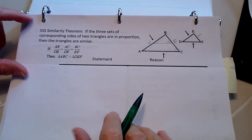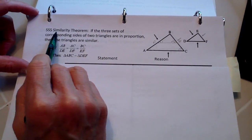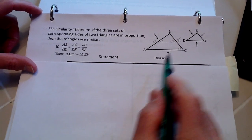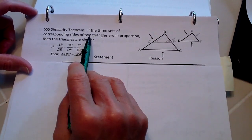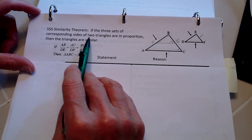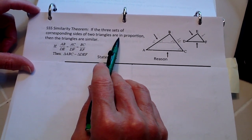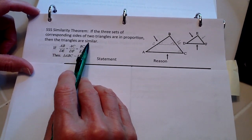Okay, we're going to prove the side-side-side similarity theorem. This is for similar triangles. If three sets of the corresponding sides of two triangles are in proportion, then the triangles are similar.